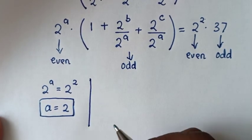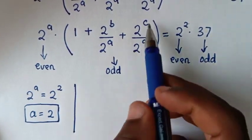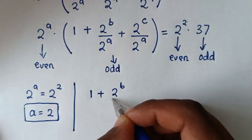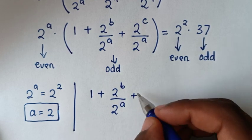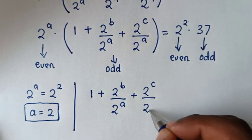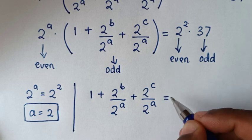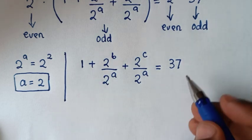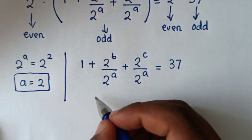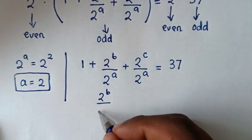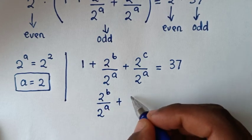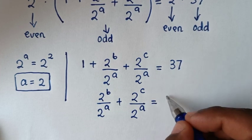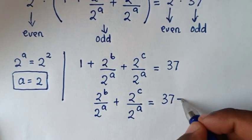Then for the second solution, we will compare these odd numbers. Inside the bracket: 1 plus 2 power b over 2 power a, plus 2 power c over 2 power a, is equal to 37. We take 1 to this side, so it will be 2 power b over 2 power a, plus 2 power c over 2 power a, is equal to 37 minus 1.